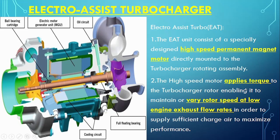The high-speed motor applies torque to the turbocharger rotor, enabling it to maintain or vary rotor speed at low engine exhaust flow rates, in order to supply sufficient charge air to maximize performance. At low load, the amount of exhaust gas is not sufficient to bring the turbocharger to the required RPM. Normally in a main engine we provide an auxiliary blower — the EAT is designed to eliminate the need for that auxiliary blower.